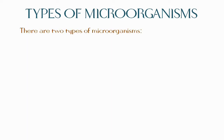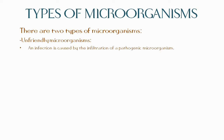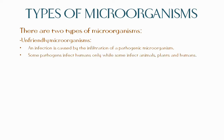There are two types of microorganisms: the unfriendly ones and the friendly ones. The unfriendly microorganisms are called pathogens. The infiltration of a pathogenic microorganism can cause an infection. Some pathogenic microorganisms infect humans but not other animals and plants, while some pathogenic microorganisms that infect animals or plants also infect humans.